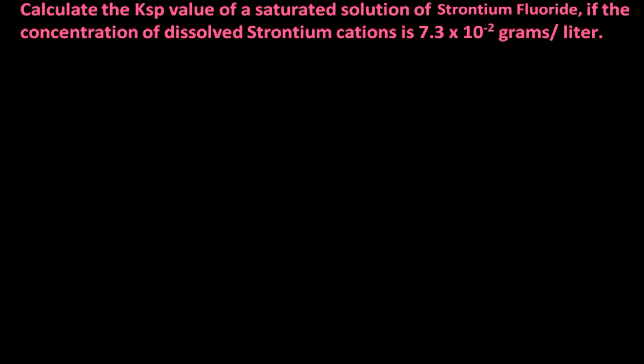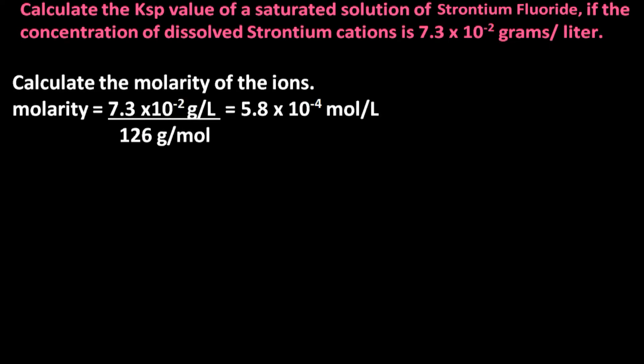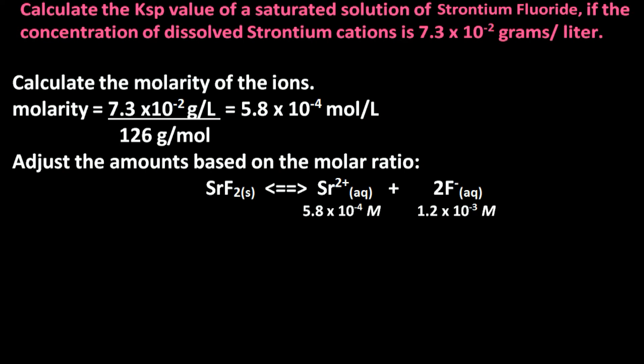Now return to the information in the practice problem, where we are given 7.3 times 10 to the minus 2 grams per liter. The KSP value is based on the molar concentration of dissolved ions, so we must first convert 7.3 times 10 to the minus 2 grams per liter to molarity. To do so, first determine the number of moles of strontium fluoride that dissolved: 7.3 times 10 to the minus 2 grams per liter divided by 126 grams per mole — the molar mass of strontium fluoride — equals 5.8 times 10 to the minus 4 moles per liter, where the grams cancel.